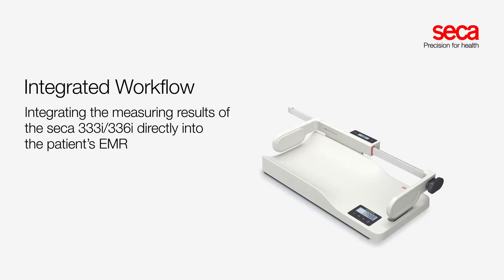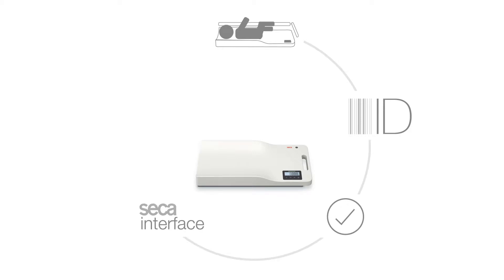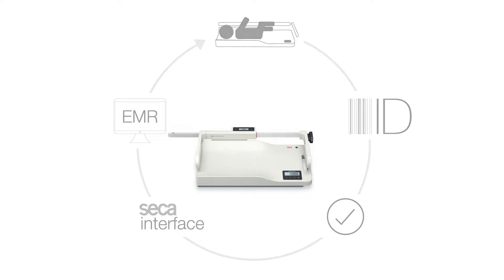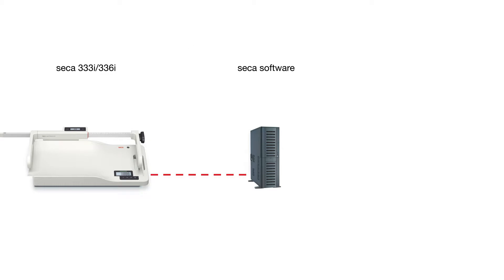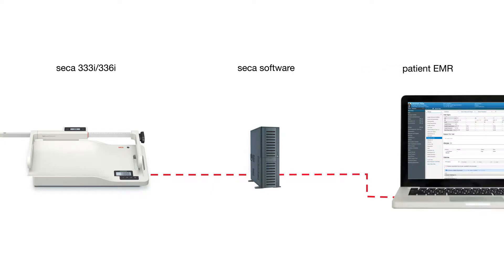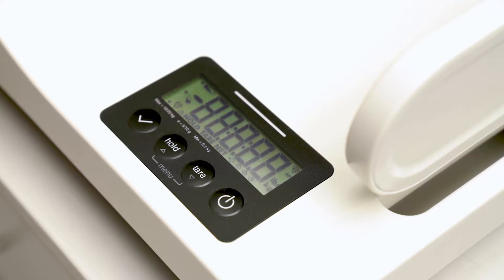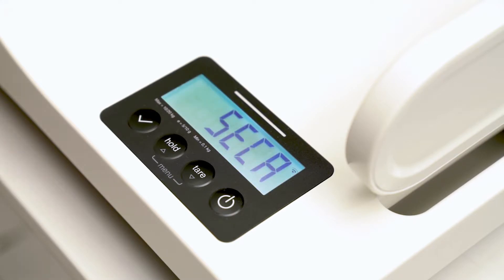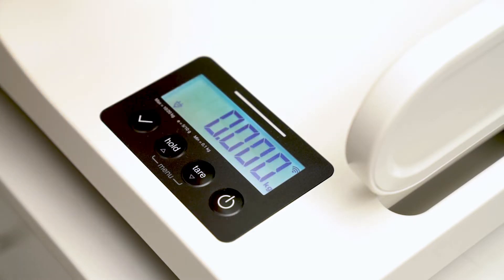This Sika baby scale can transfer the baby's weight directly into its personal medical record in your facility's EMR system. With the optional digital measuring rod, the baby's length can be transmitted at the same time. When following a defined workflow, the measurements will be transmitted from the scale to a central server on the local network, on which the Sika software will receive the data and relay it to the proper patient's record in the EMR system. The system is operational when the scale is turned on and the Wi-Fi symbol stops blinking.